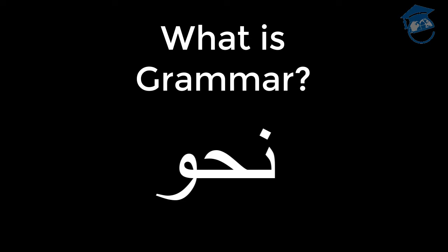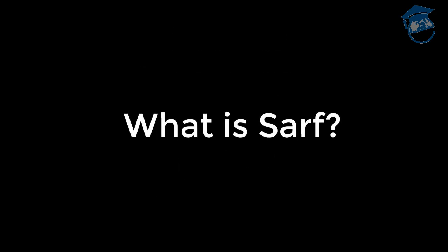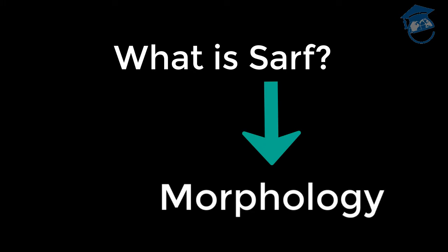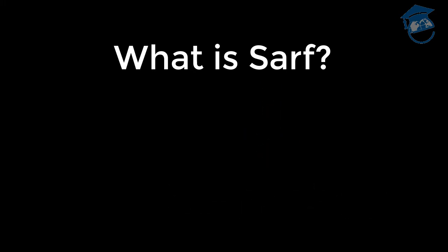Nahu is the study of the language and the various rules governing the words as they appear in a sentence. What is sarf? Sarf is often translated as morphology. The science of sarf is the study of the internal structure of a word. The study of sarf focuses primarily on the Arabic verb, the formation of verbs, how they change, and the rules applied to them. You can think of it as verbology.